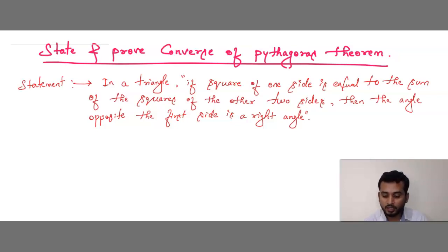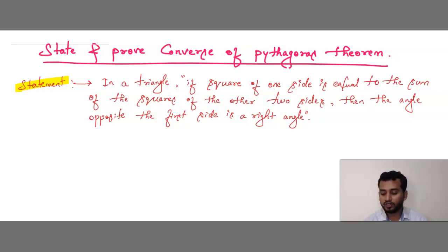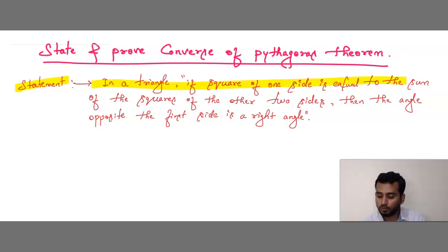Now the statement is: in a triangle, if the square of one side is equal to the sum of the squares of the other two sides, then the angle opposite to the first side is a right angle. This is the statement of the Converse of Pythagoras Theorem.